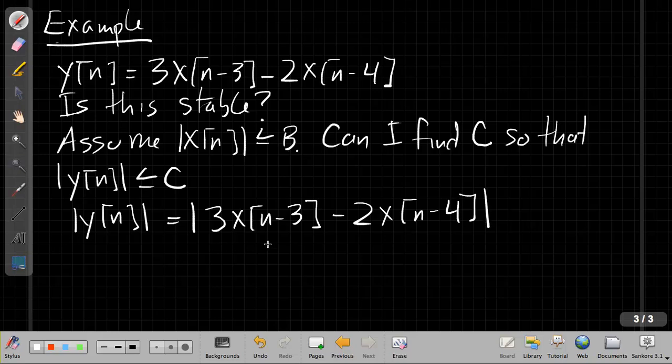And now we use properties of addition and subtraction. We know that the magnitude of a difference is less than or equal to the magnitudes of the individual terms added. We say the most this could be would be 3 times the magnitude of x[n-3] and 2 times the magnitude of x[n-4]. That's just a basic property. When I have the sum or difference of two things, I take its absolute value. I can put an upper bound on this.